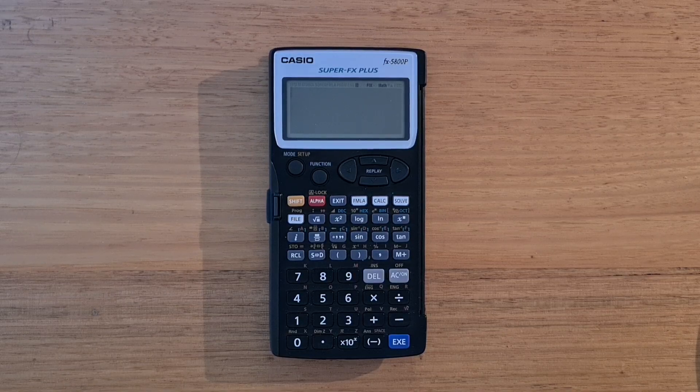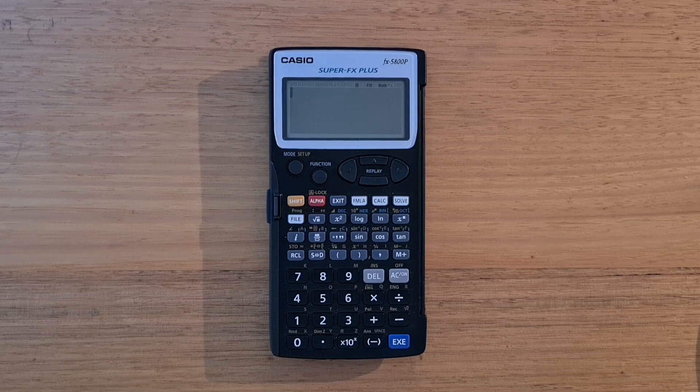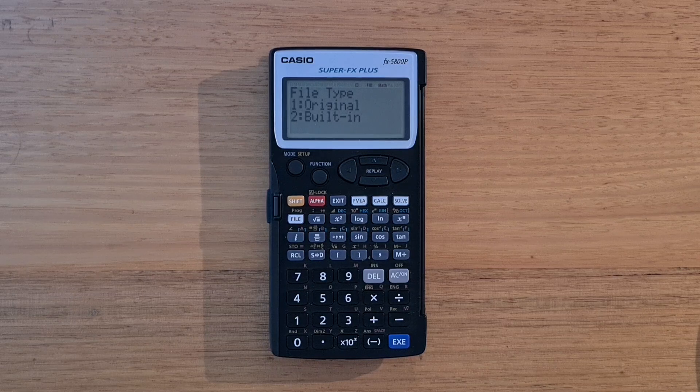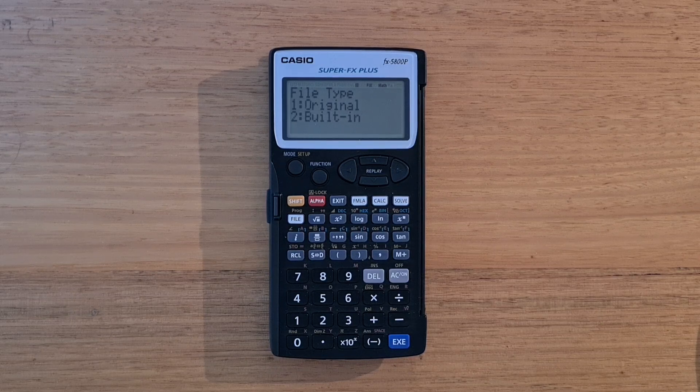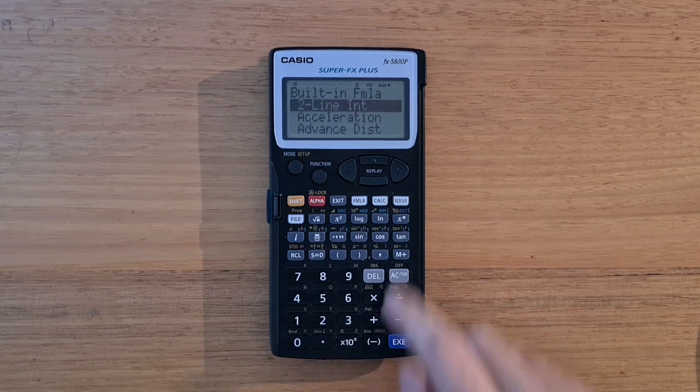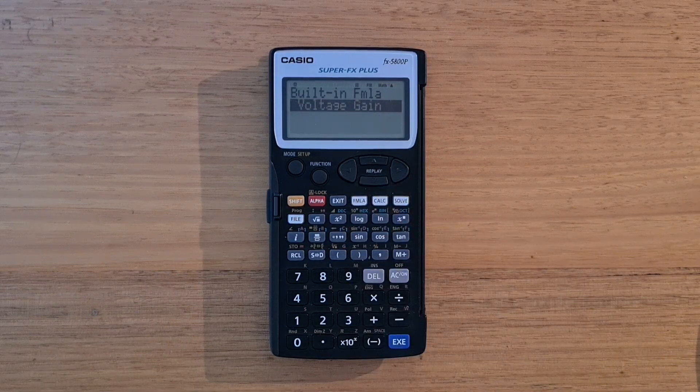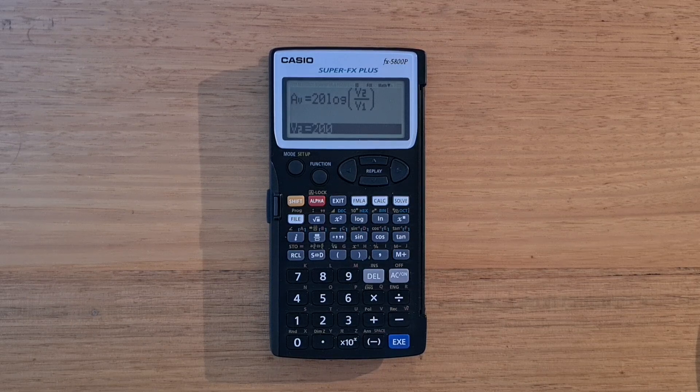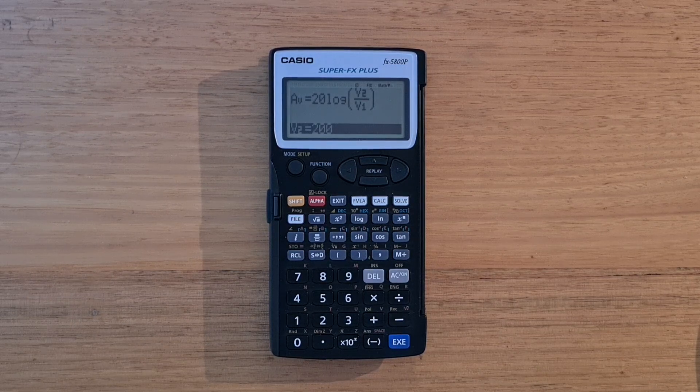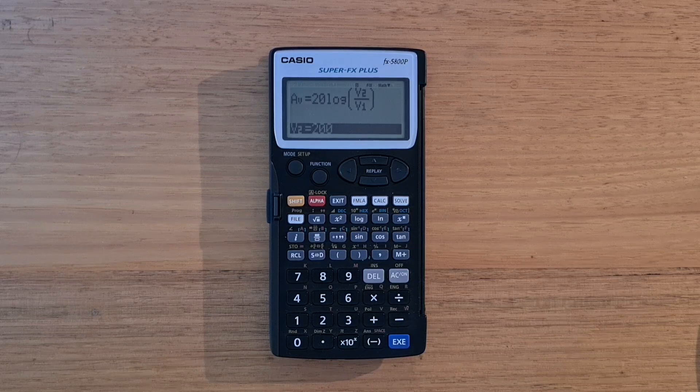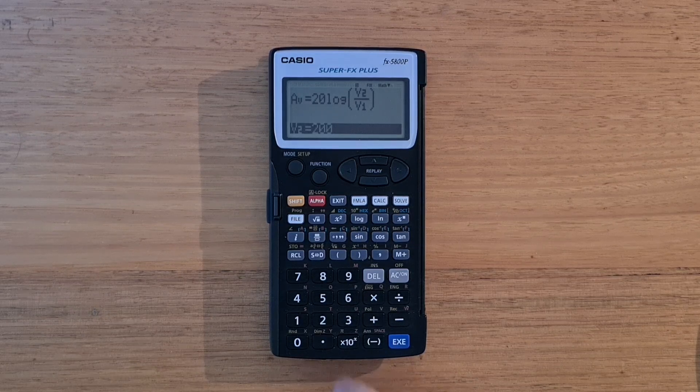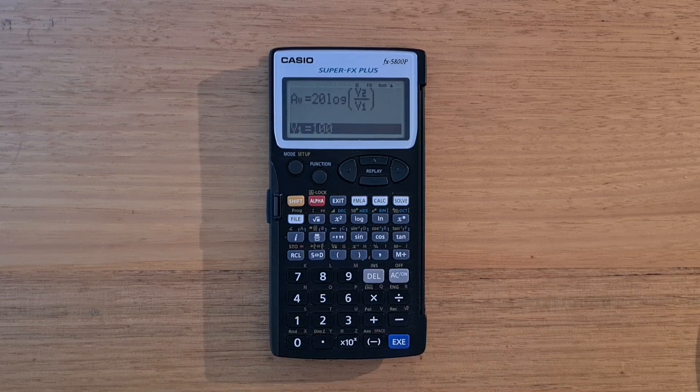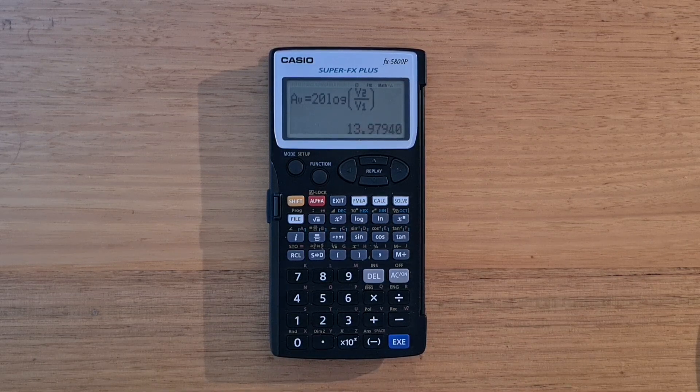And the 5800P supports a lot of formula-related functions. So hitting the formula key allows us to select from original user-defined or 128 built-in formulas. So let's pick the last built-in formula. And this calculates the voltage gain in decibels between two voltages, V1 and V2. And so we can plug in our values and hit the EXE key to calculate the result.